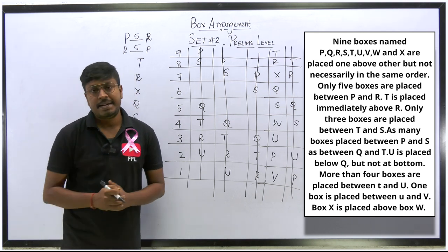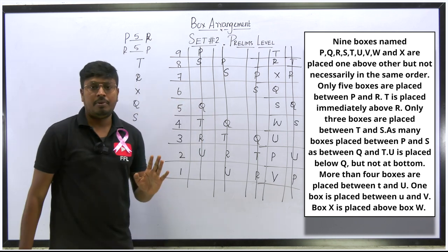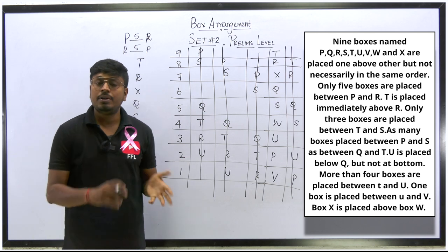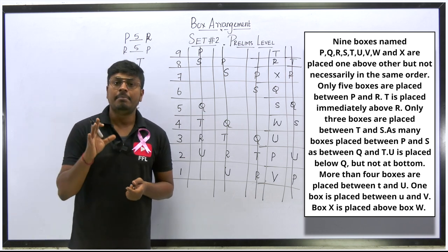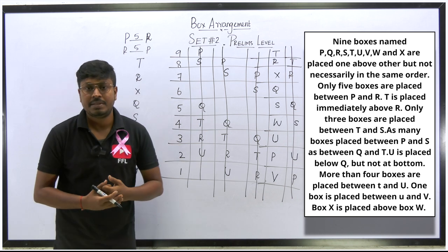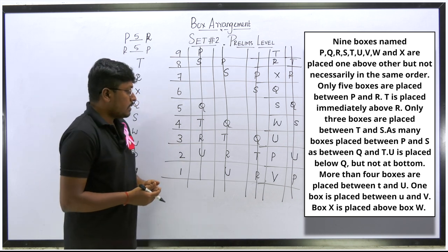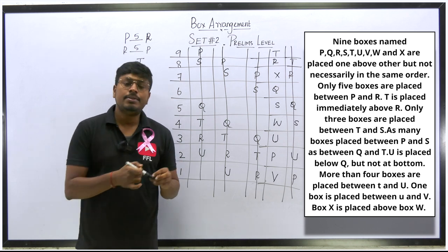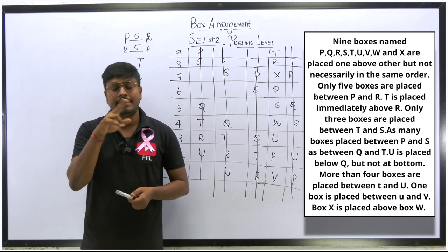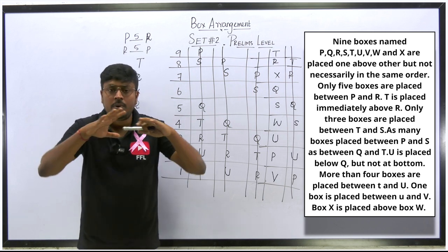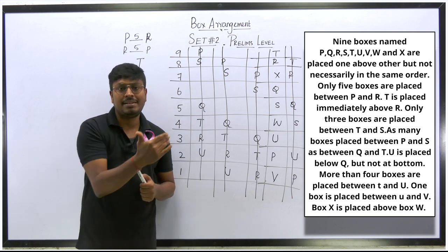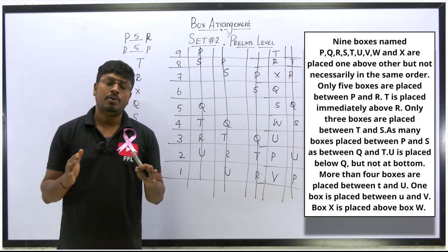See how easy it is when you go with possible diagrams. Try solving the same question without drawing a possible diagram — if you are a beginner or medium-level student you will definitely struggle. This question was asked in IBPS PO 2018 Prelims exam. For box arrangement and floor-based puzzles, always draw possible diagrams. For seating, circular, or square arrangements you don't need as many possible diagrams since they are time-based.